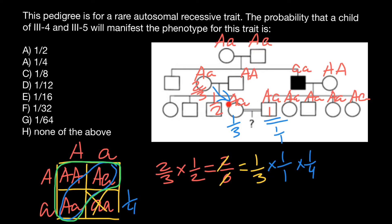We multiply 1/3 by 1/4 — that's the probability of a homozygous recessive child if this couple are both heterozygous. Our final answer is 1/3 multiplied by 1/4, which equals 1/12. The probability for this couple to have an affected child of unspecified sex is 1/12. Thank you for your attention — please subscribe for my new videos that I post almost every day. See you in the next video, goodbye!